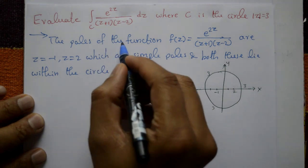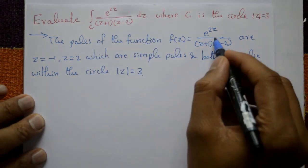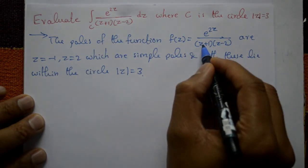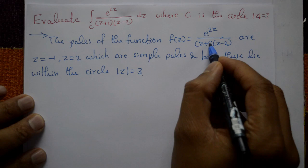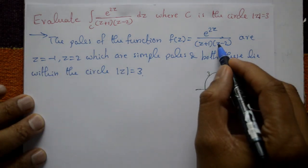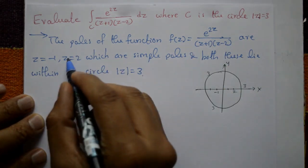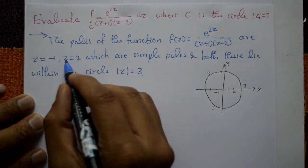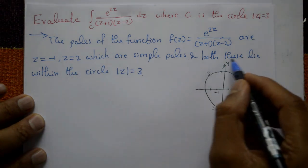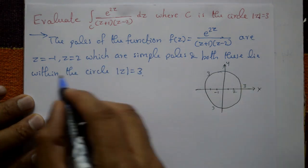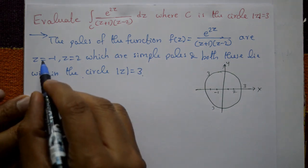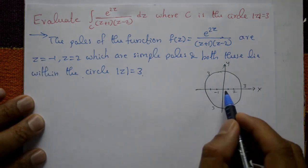The poles of the function f(z) are given by: the first pole is z = -1, and the second pole is z = 2. Both of these are simple poles, and both lie within the circle |z| = 3.